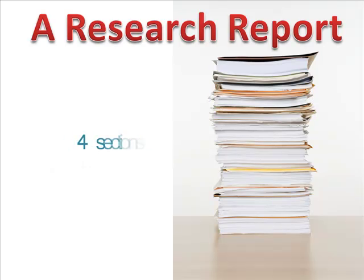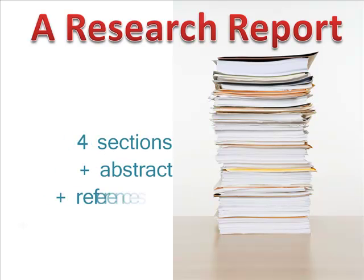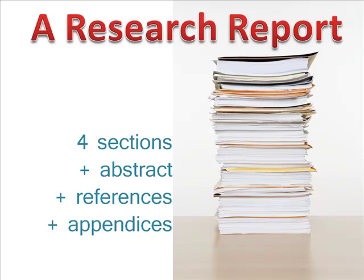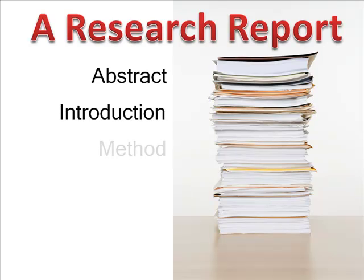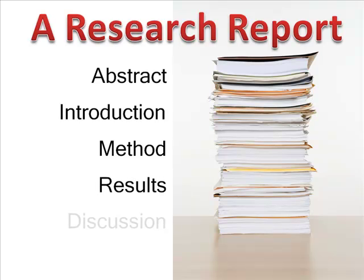When reading a journal article or research report, you'll find an abstract in four major sections. In order of reading, there's an abstract — a 100 to 150 word summary of the study — an introduction, a method section, a results section, and a discussion section.